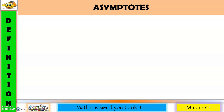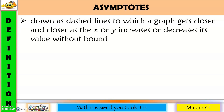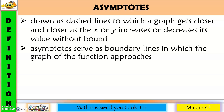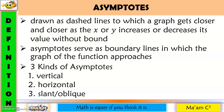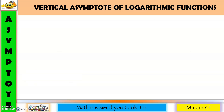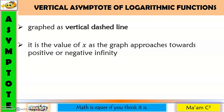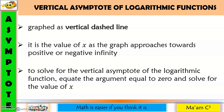Now let us discuss asymptotes — dashed lines to which a graph gets closer and closer as x or y increases or decreases without bound. They serve as boundary lines that the graph of the function approaches. There are three kinds: vertical, horizontal, and slant or oblique. However, logarithmic functions only have vertical asymptotes. To solve for the vertical asymptote, equate the argument equal to zero and solve for x.